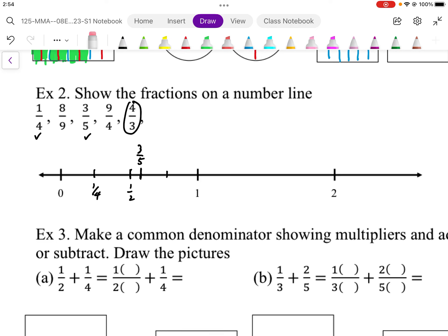4 over 3 is a little bit bigger than 1. And what I'm going to do is divide this into thirds because I know it's going to be 1 whole plus 1 third. So 3 over 3 is 1 whole. 4 gives us 1 extra third past 1. So 4 thirds is going to be there.